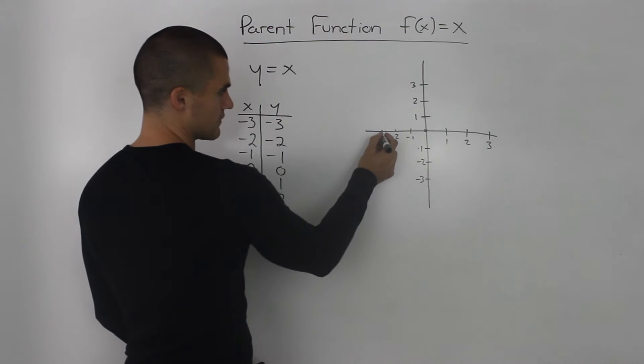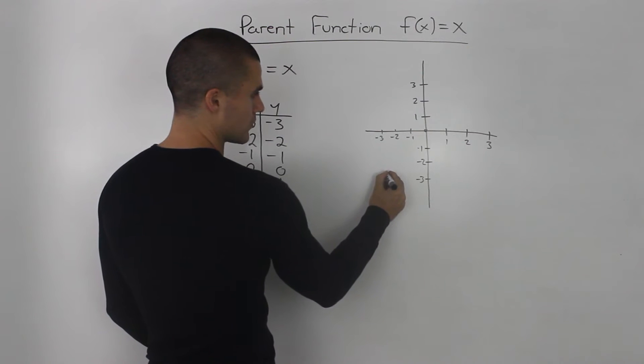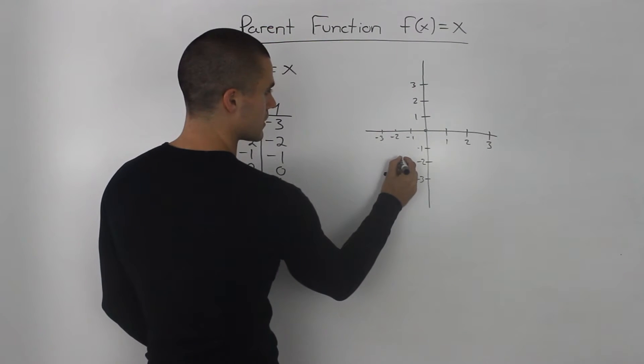So then taking these points, an x value of negative 3, a y value of negative 3, that would be here. Negative 2, negative 2 would be here.